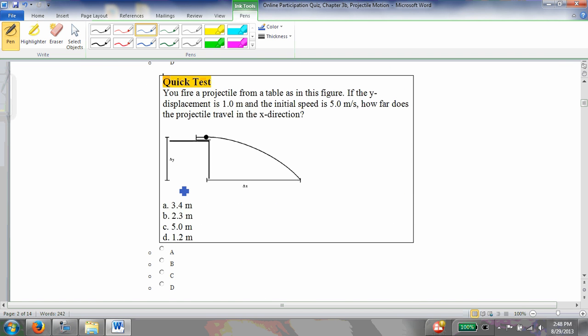All right, you fire a projectile from a table, as in this figure. If the y displacement is 1 meter, I'm going to go ahead and write this in. This distance right here is 1 meter. And the initial speed is 5 meters per second. So the velocity here, v_not, is 5 meters per second. How far does the projectile travel in the x direction?